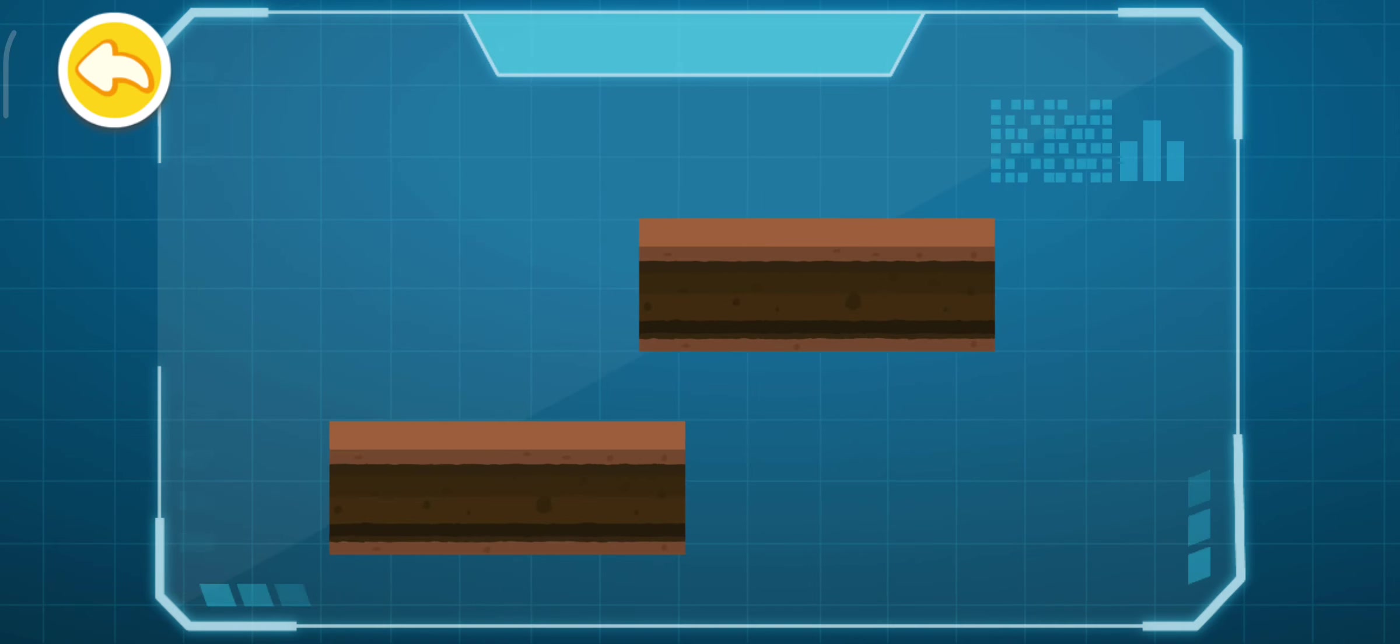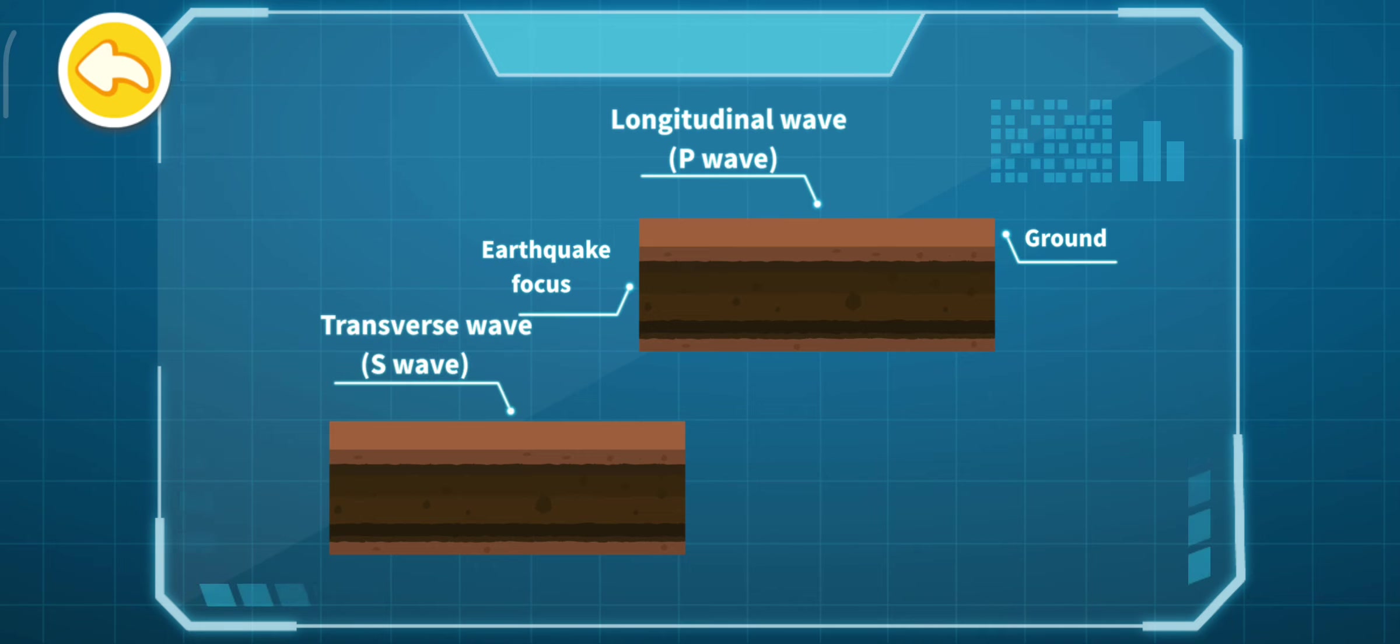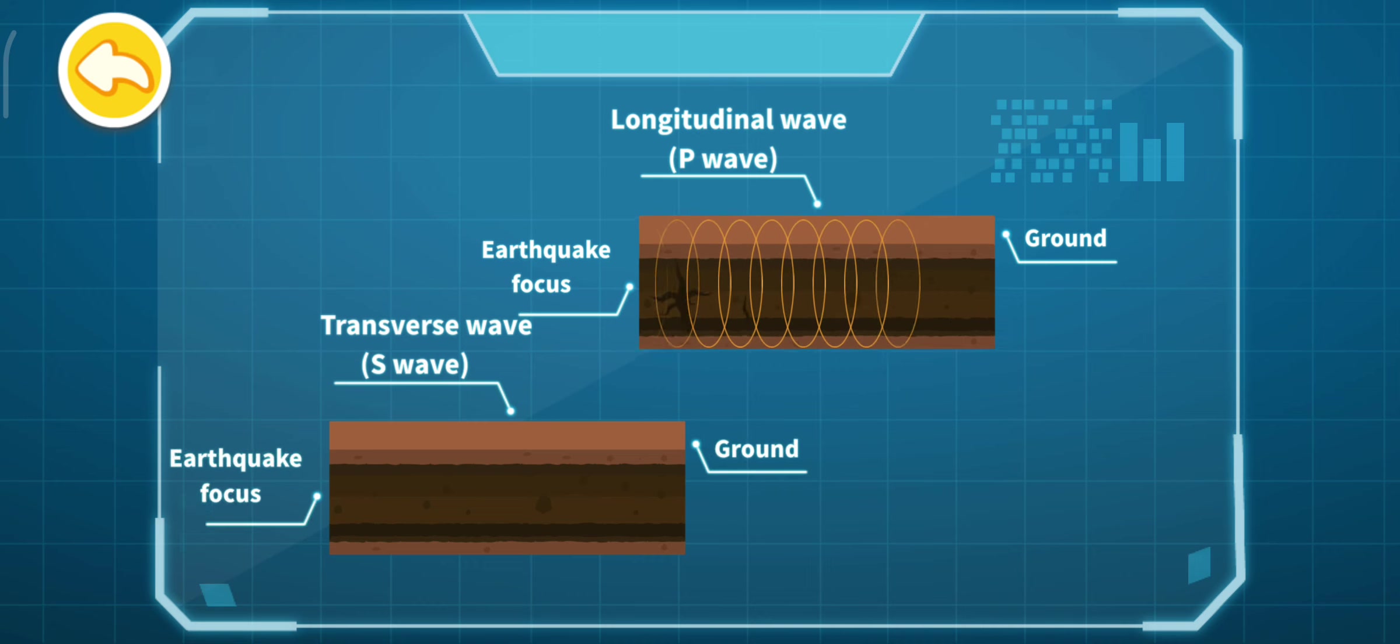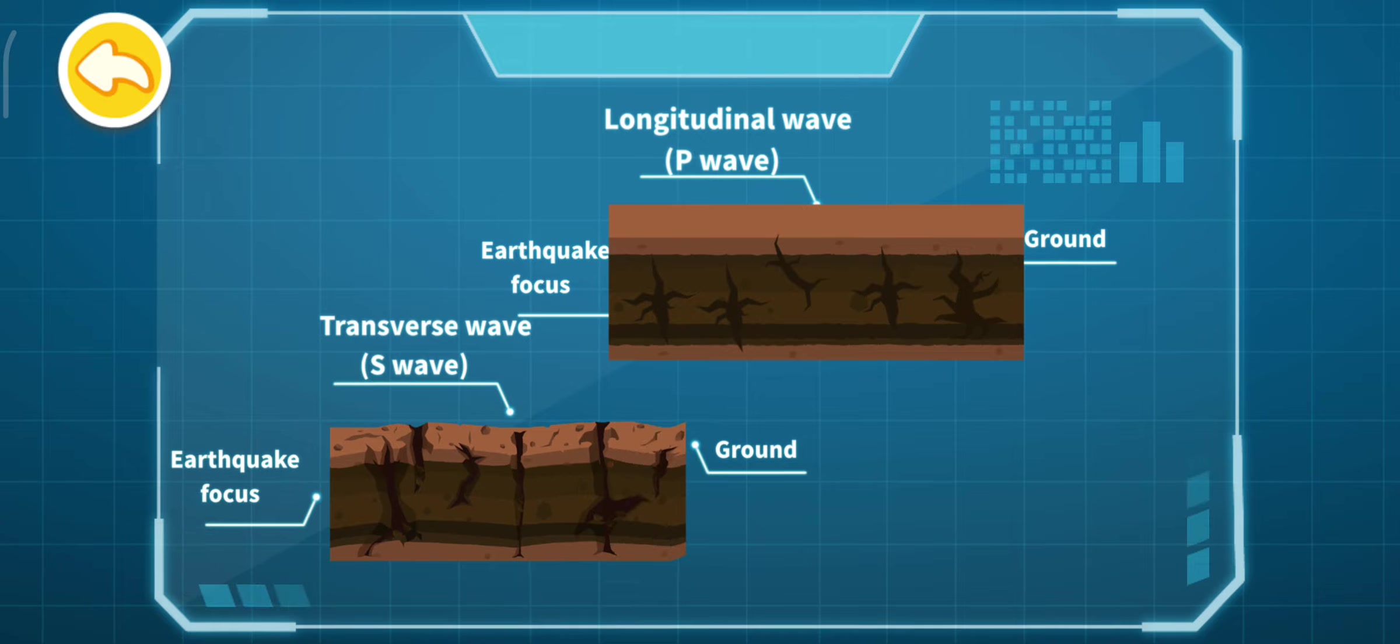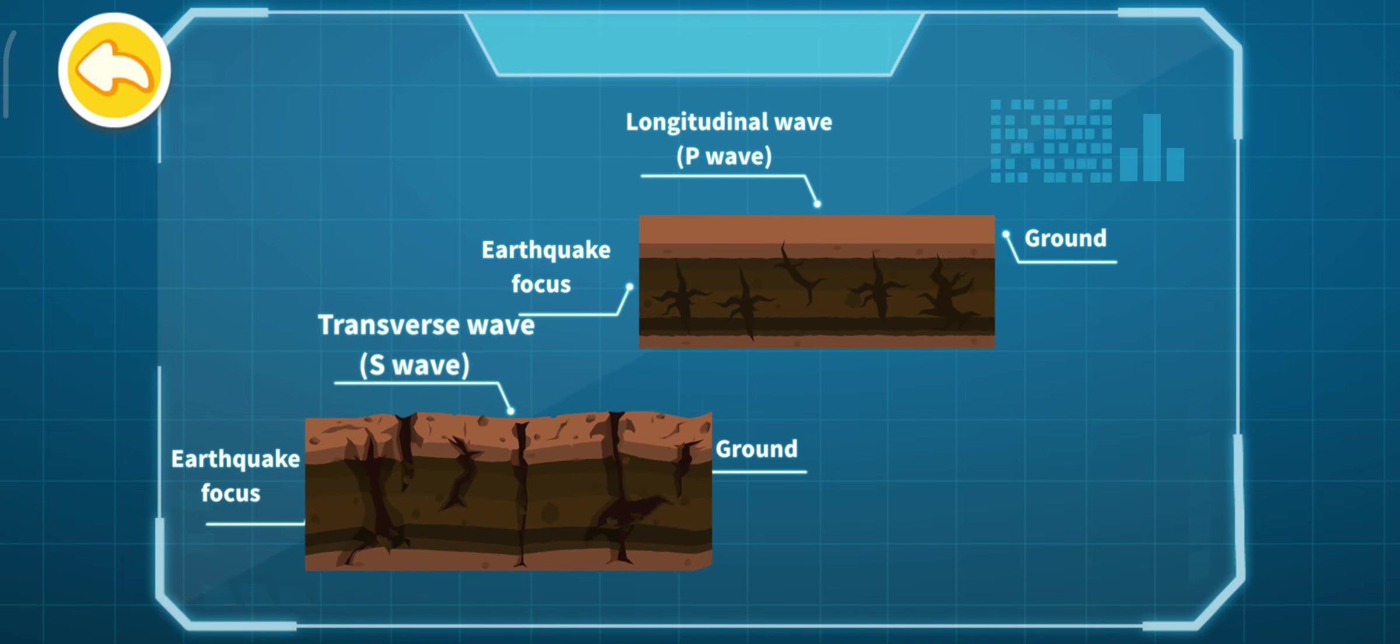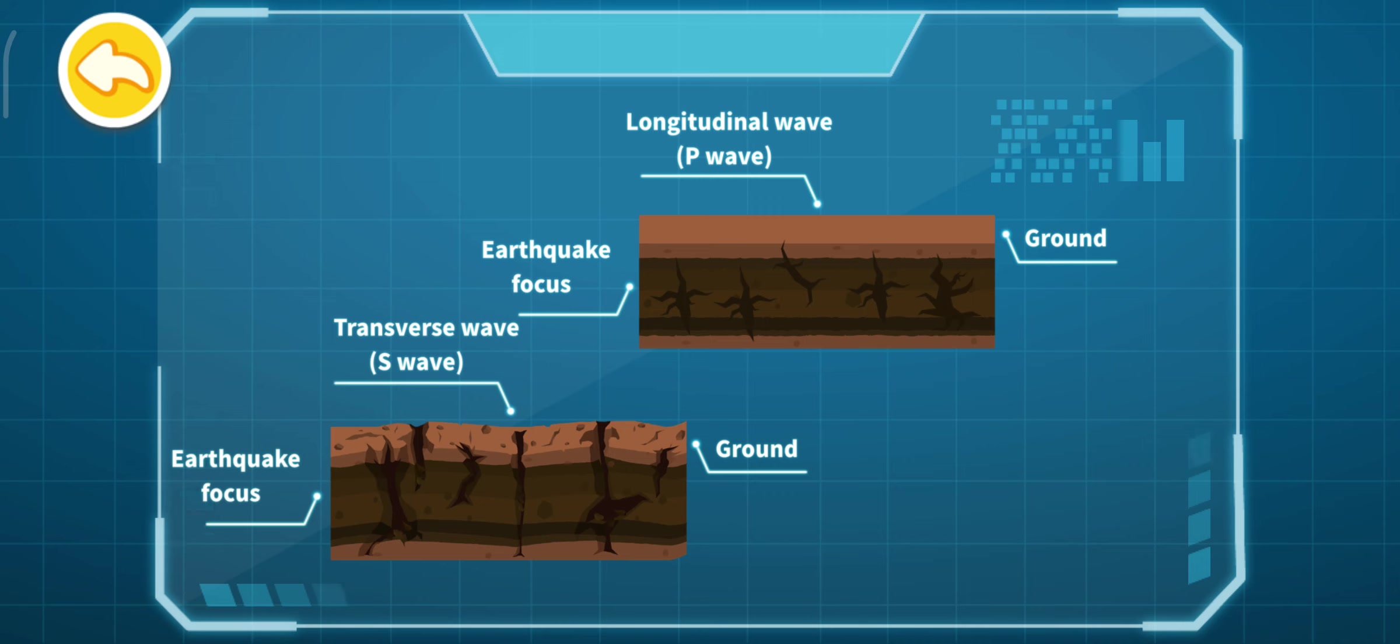When the earthquake strikes, there are two main types of seismic waves, longitudinal wave and transverse wave. Longitudinal wave has faster propagation speed while causing less damage. Transverse wave has slower propagation speed while causing more damage. When an earthquake warning system detects the arrival of the longitudinal wave, it will send an alert before the arrival of the more destructive transverse wave.